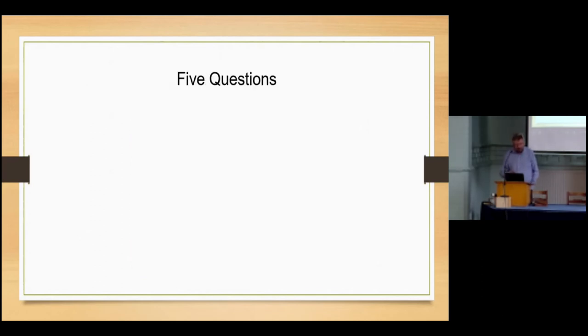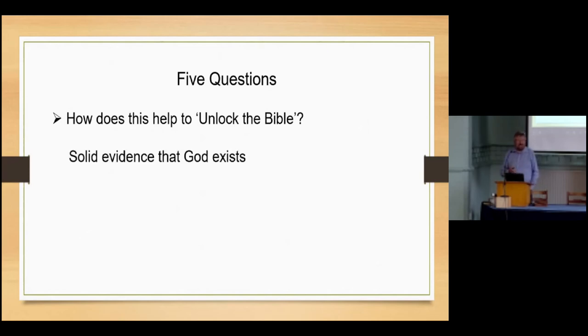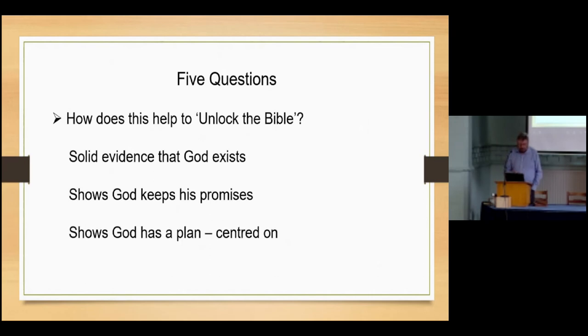And every time we see that flag, every time we hear the name of the state of Israel, it's proof to us that God keeps his promises and that Israel are his witnesses. So getting back to those five questions, the fourth one was: How does this help us to unlock the Bible? Well, I suggest it provides solid evidence—I'd actually call it proof—that God exists, and it shows that God keeps his promises, promises made centuries ago. God keeps them. He always keeps his promises. And it shows that God has a plan which is outlined for us throughout the Bible. It's a plan which is centered on Israel and on his son, the Lord Jesus Christ. And seeing Israel as God's witnesses helps us to unlock, to get our way into, to understand God's message for us in the Bible.